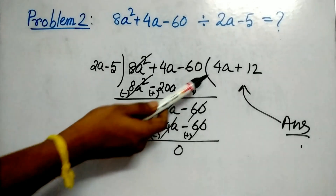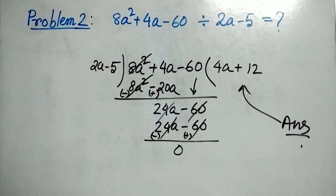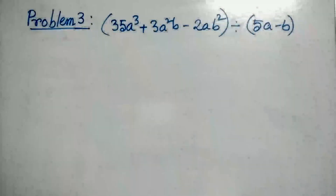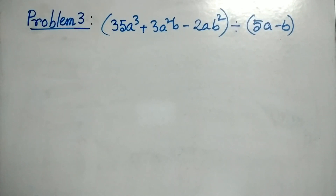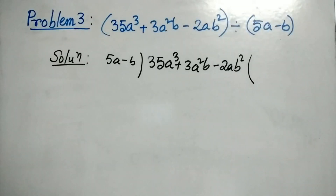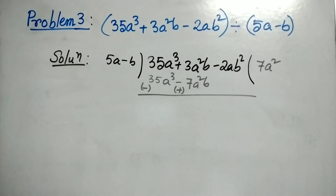4a plus 12 is the answer. Our next problem is 35a cubed plus 3a squared b minus 2ab squared, divided by 5a minus b. The difference between this problem and the previous problems is that here we are using two variables; in the previous problems we used just one variable. The rule is the same.